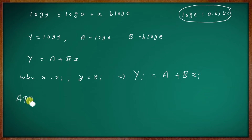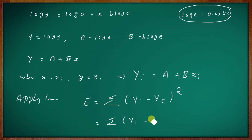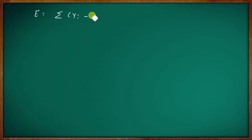Apply the least squares method. E equal to summation of (Yi minus Ye) all squared, where Yi is the observed value and Ye is the expected value. Substituting, E equal to summation of (Yi minus a minus b·xi) all squared. We have two parameters a and b.